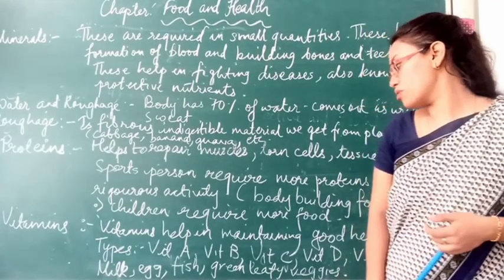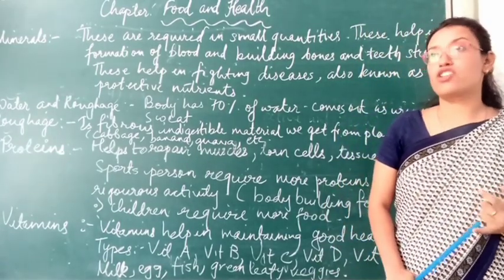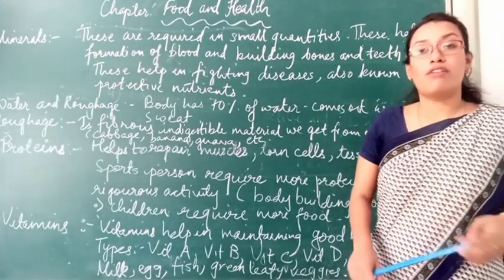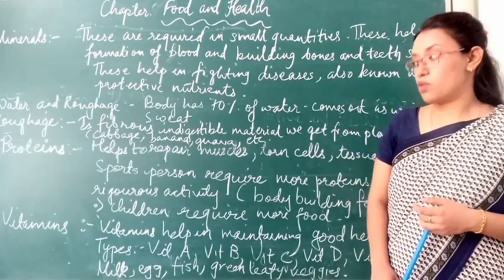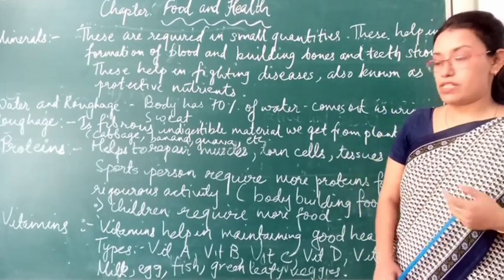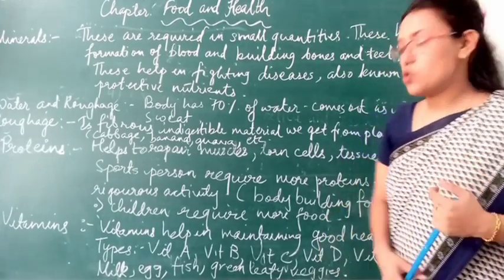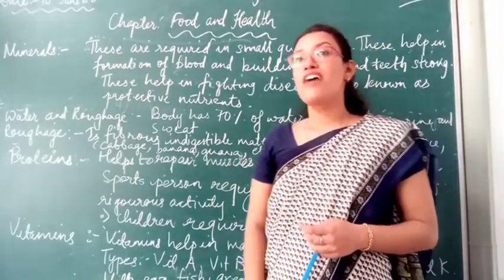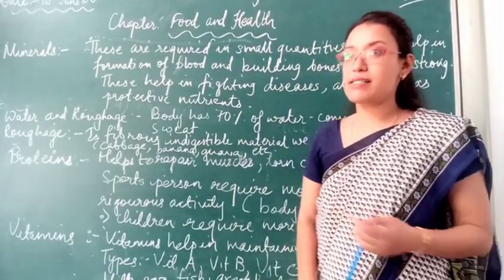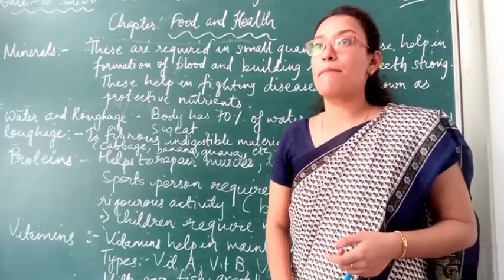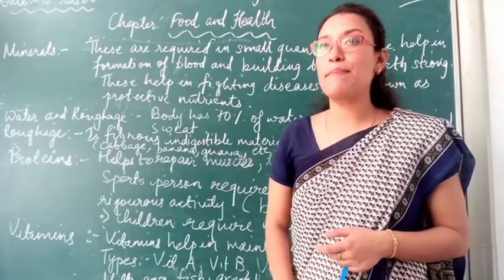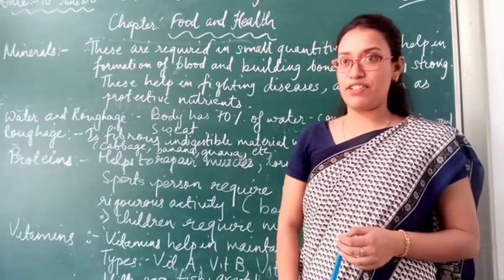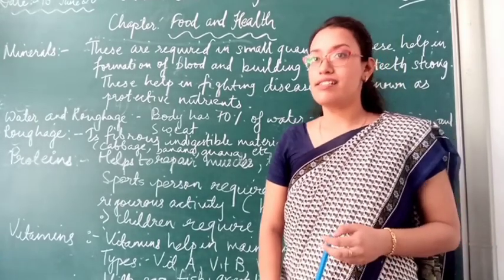From what different things do we get proteins? We get proteins from meat, chicken, mutton, egg, milk, spinach, and other foods and vegetables. Then there are vitamins. Vitamins are important nutrients that help in maintaining good health. Vitamin A can be gained from carrots, papaya, mango, rice, butter, egg yolk, milk, and green leafy vegetables. Vitamin B can also be gained from green leafy vegetables, milk, cereals, and peas.